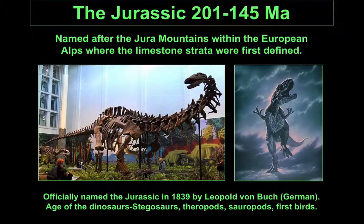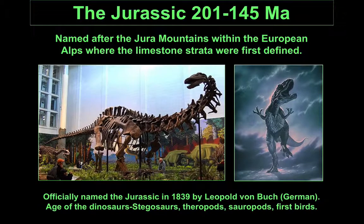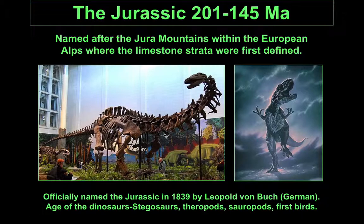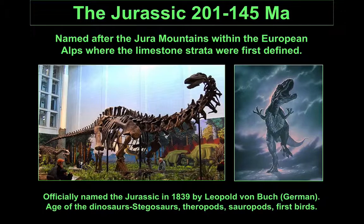The Triassic gave way to the Jurassic, named after the Jura Mountains. This is really the age of the dinosaurs. Many famous dinosaurs — like Stegosaurus, Apatosaurus, the giant sauropods, and Allosaurus — all lived at this time. Certainly in northern Europe, this was a time of shallow seas chock full of diverse life.